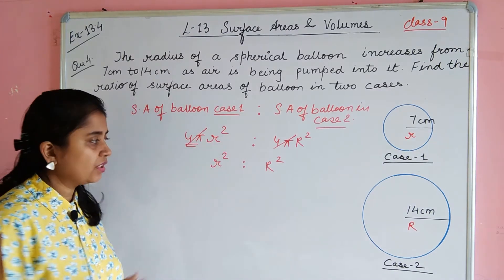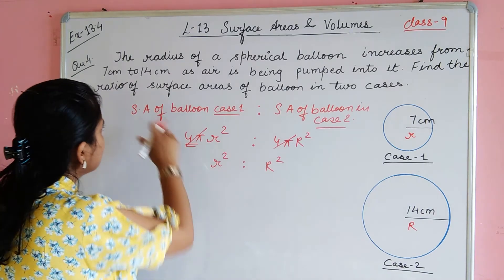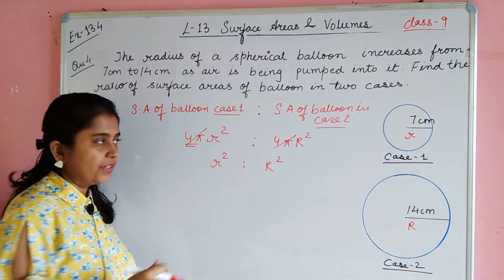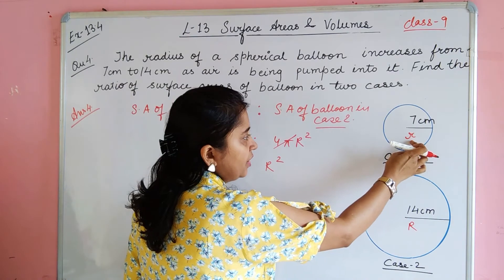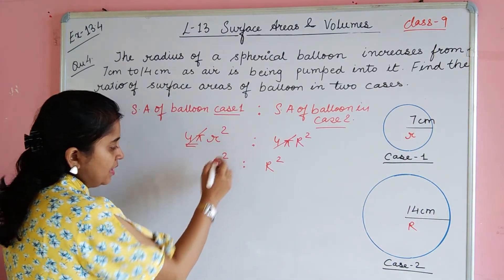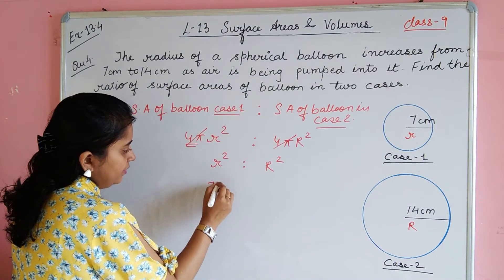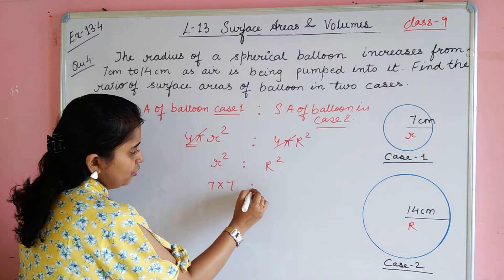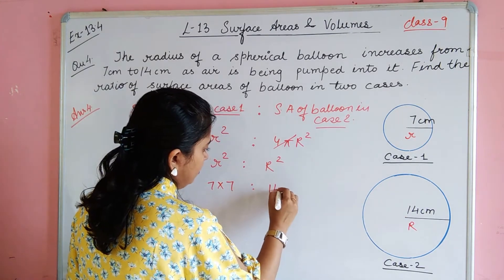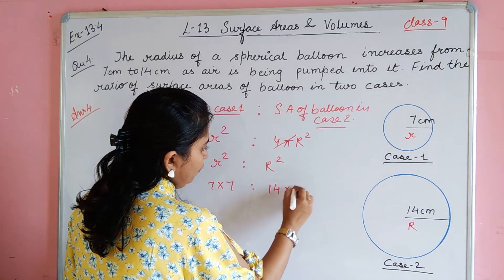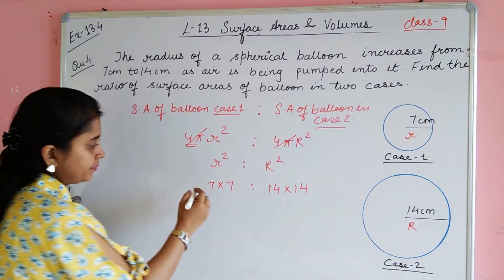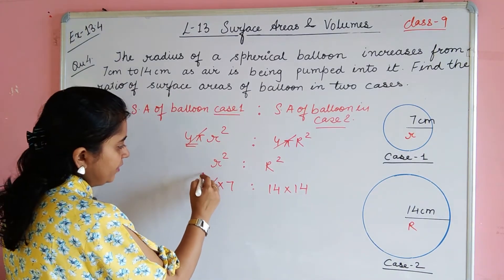We have to find the value of r squared. The small r is 7 cm, so 7 squared. And capital R is 14 cm, so 14 multiplied by 14.